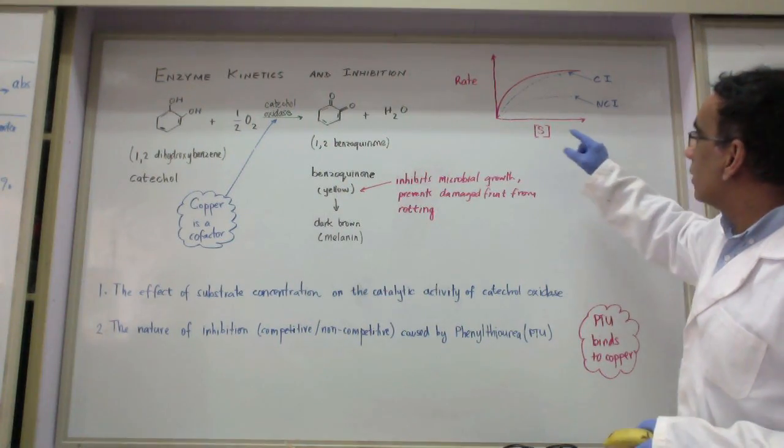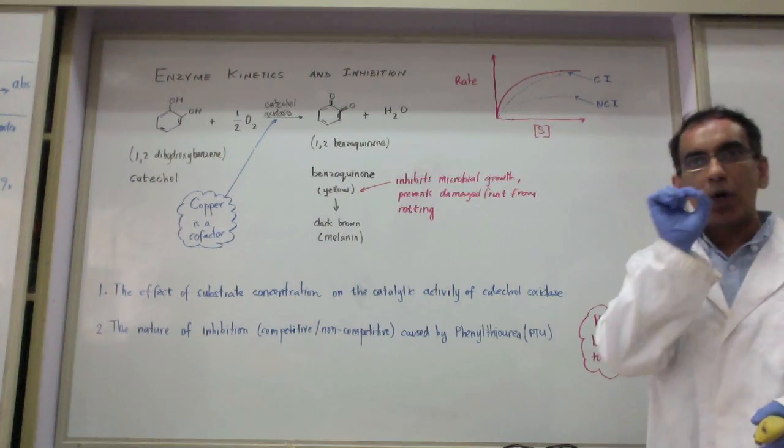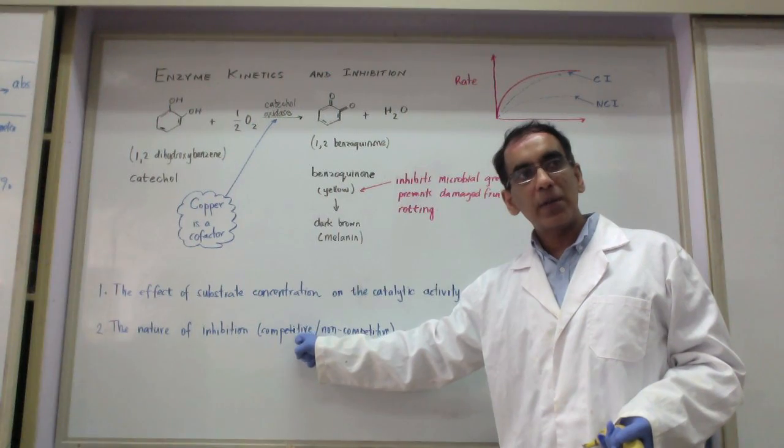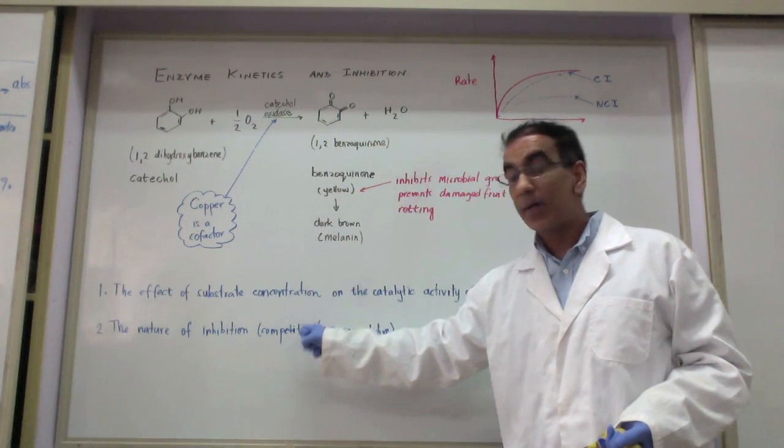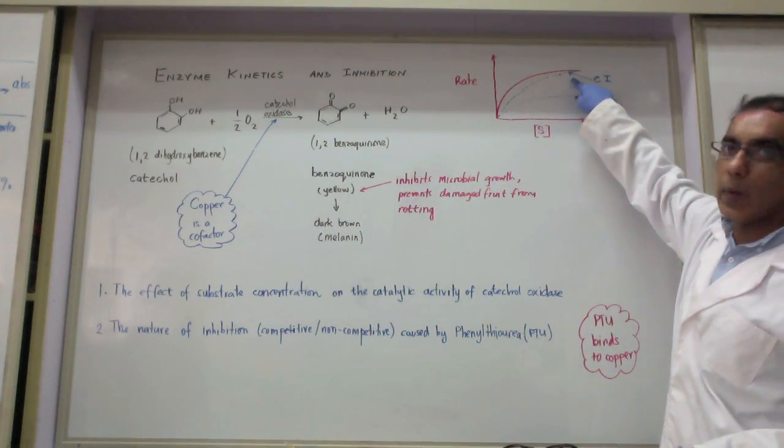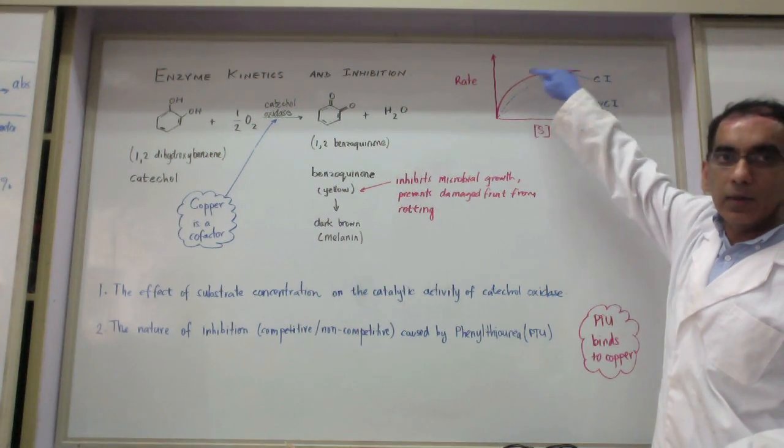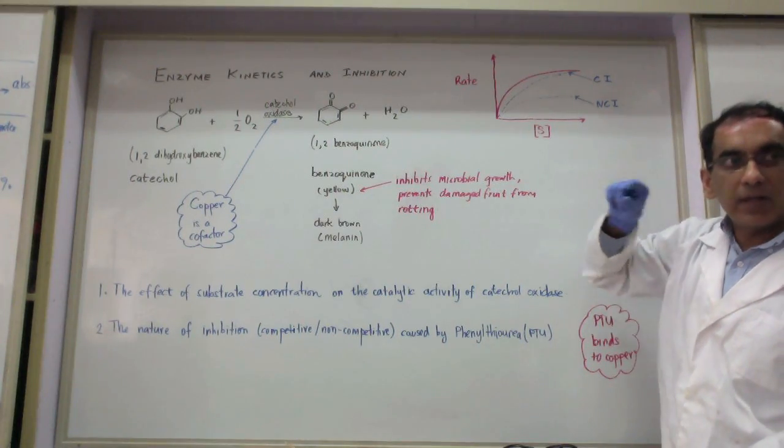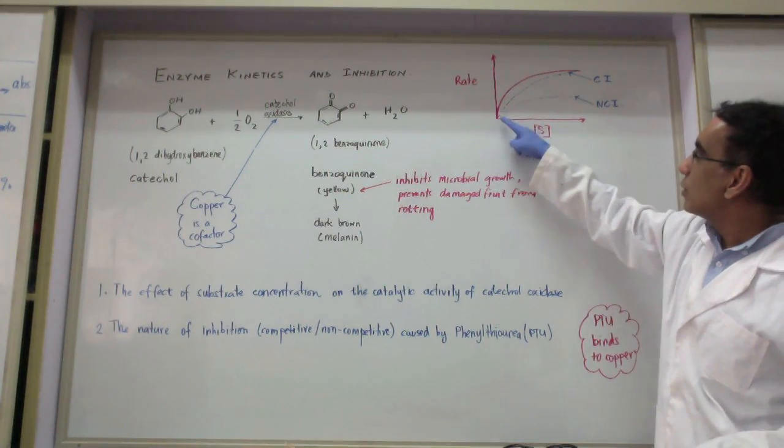So therefore, we should be able to get some data to find out if it is a competitive or non-competitive inhibitor. What we need to do is add a small amount, just one drop of PTU. Once the substrate concentration becomes high enough, a competitive inhibitor would acquire the same rate. But if you have a non-competitive inhibitor and you do all the trials, then you should get something like this.